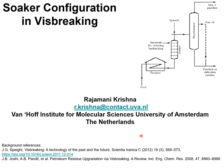Visbreaking conditions range from about 460 to 500 degrees Celsius. The residence time in the furnace is very short, and it is the short residence time that brings to visbreaking the concept of being a mild thermal cracking process.